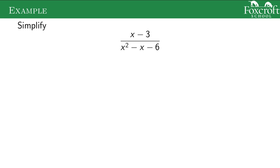Say we wanted to simplify this expression. A lot of people will be tempted to cross out these x's because there's an x on the top and x on the bottom. But that x has a minus sign next to it, not a multiplication symbol. This x has two subtractions next to it. So we can't cancel out those x's — that's not how simplifying fractions work. You have to write it as multiplication. What we can do is leave the top the same; the bottom is a quadratic, which means we can factor it.